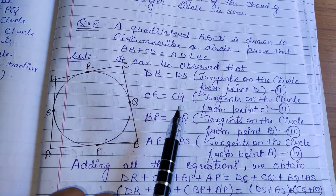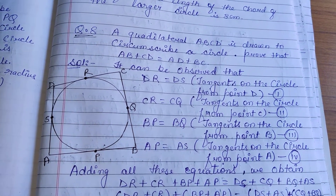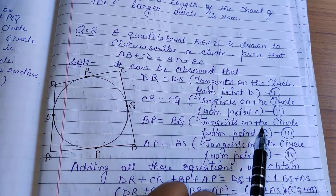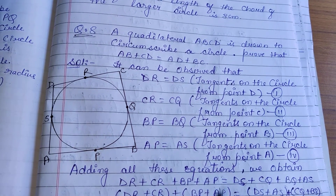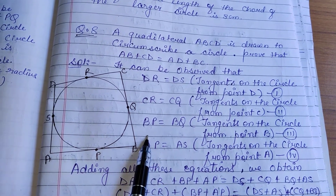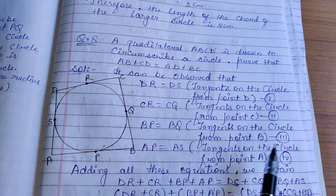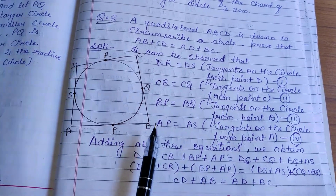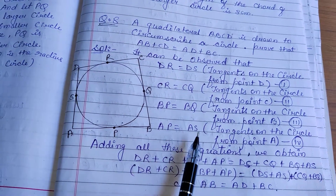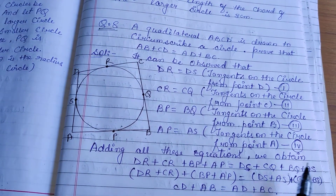Similarly, CR equals CQ — both are tangents from point C, equation 2. BP equals BQ — tangents from point B, equation 3. And AP equals AS — tangents from point A, equation 4.